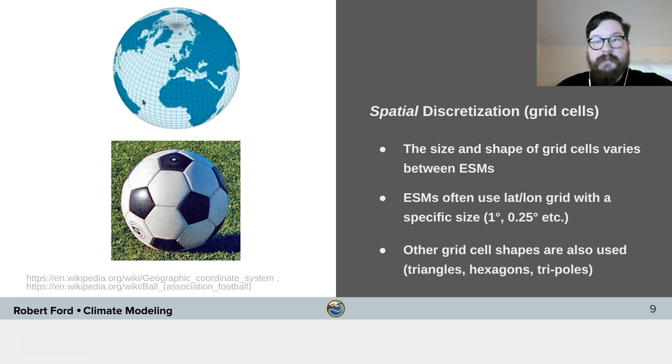For example, the poles can be moved away from the geographic poles, or there could be three poles. Some of the grids have increased resolution over certain regions if some process needs a finer scale to be resolved. And some even use grid cells that aren't rectangles, which might look something like this soccer ball.